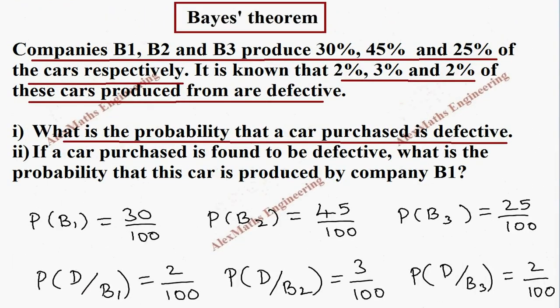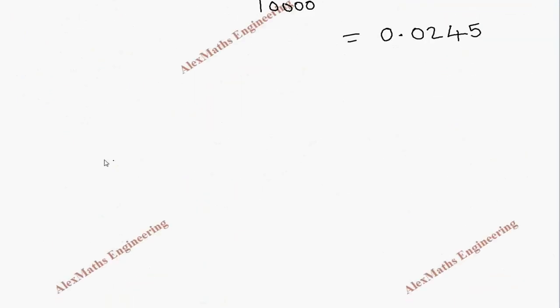Now coming to subdivision 2, they are asking, if a car purchased is found to be defective, what is the probability that it is produced by company B1? So what they are asking will come in the numerator. We already know it is defective. What is the probability it's coming from company 1? What we already know is written in the denominator, and what we are going to find is written in the numerator.